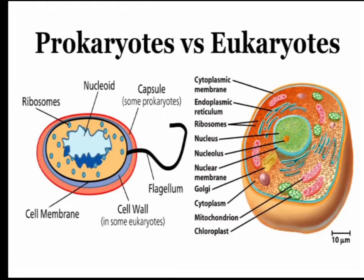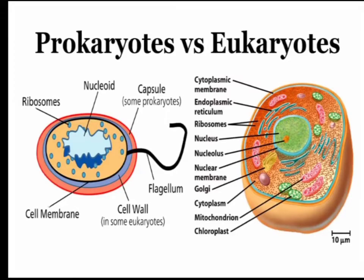Coming to the eukaryote, it has all the advanced organelles for a cell: chloroplast, mitochondria, and in the cytoplasm there are many organelles like the Golgi body, ribosome, and endoplasmic reticulum. Around the cytoplasm there is a cytoplasmic membrane and a clear nuclear membrane. Inside that nuclear membrane is the nucleus with chromosomes, which are separated from the other cell organelles in the cytoplasm.